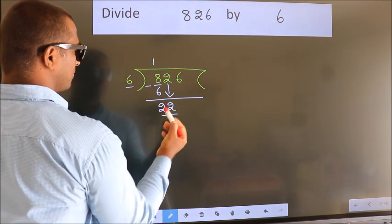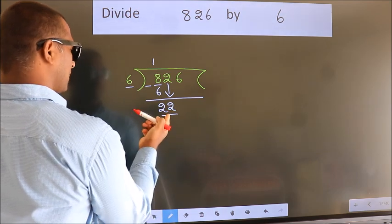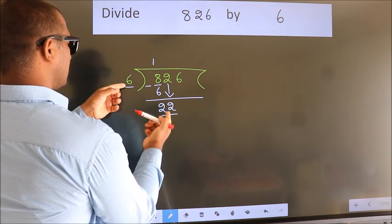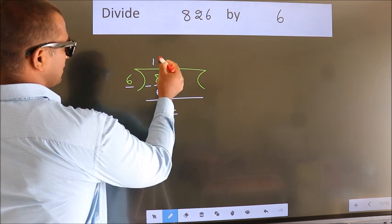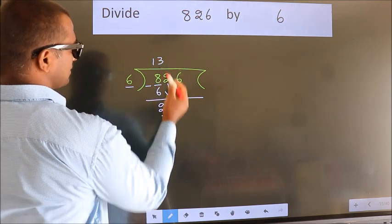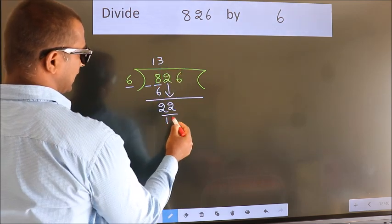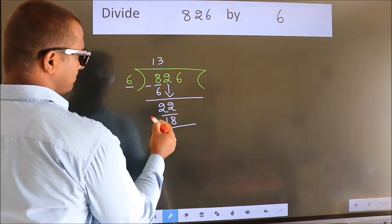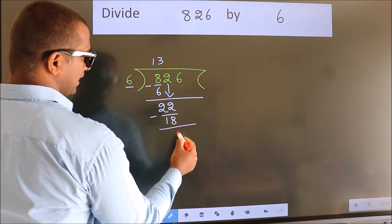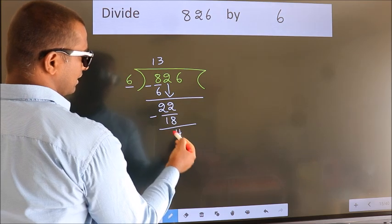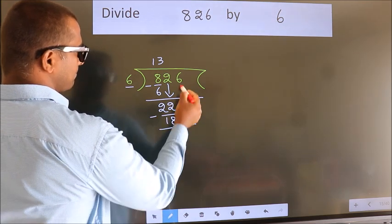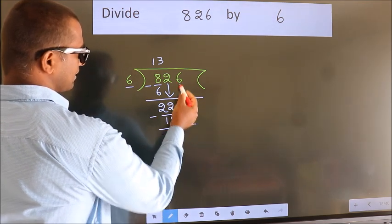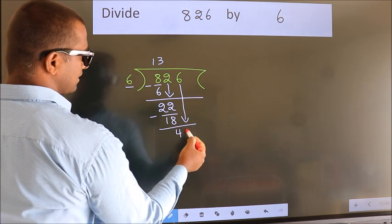So we have 22. A number close to 22 in the 6 times table is 6 threes, which is 18. Now we subtract and we get 4. After this, bring down the beside number, so 6 comes down.